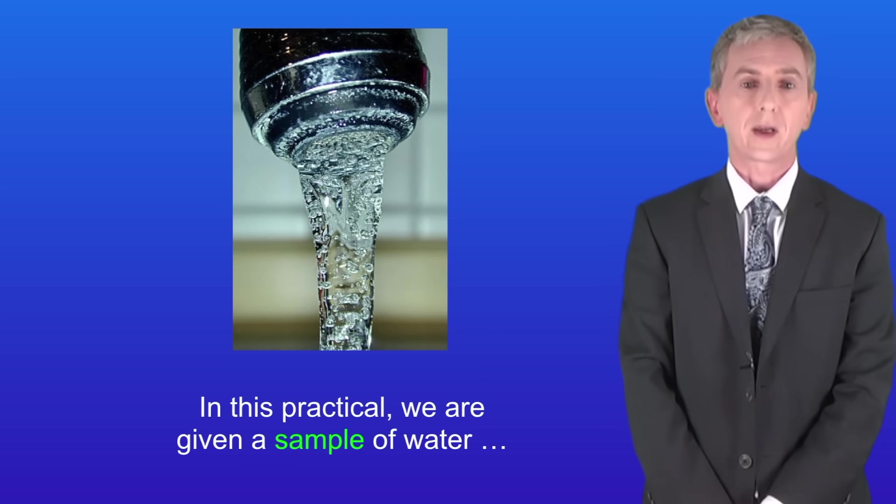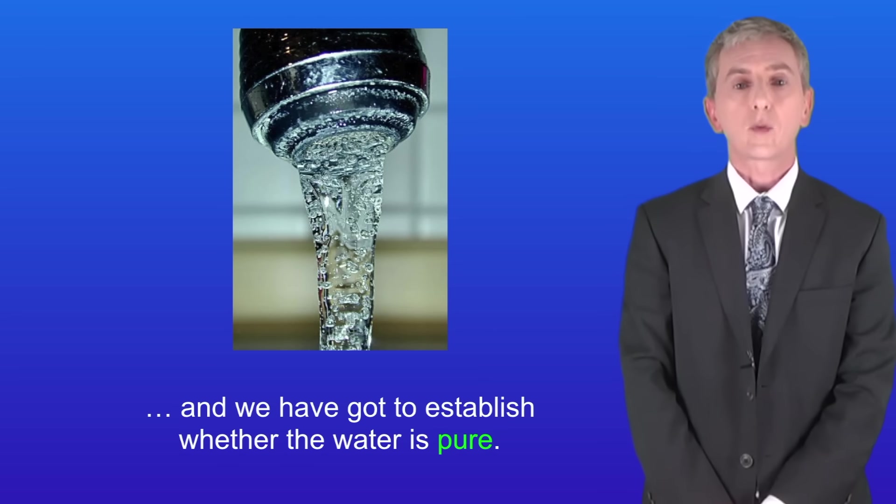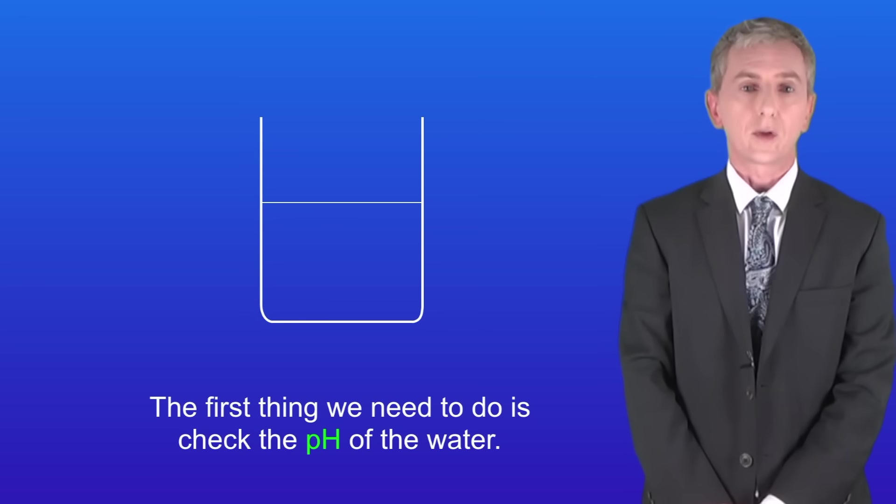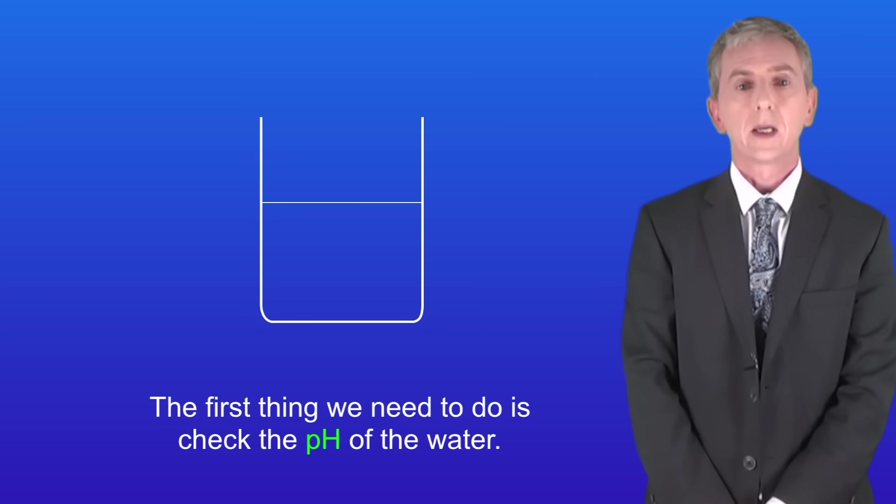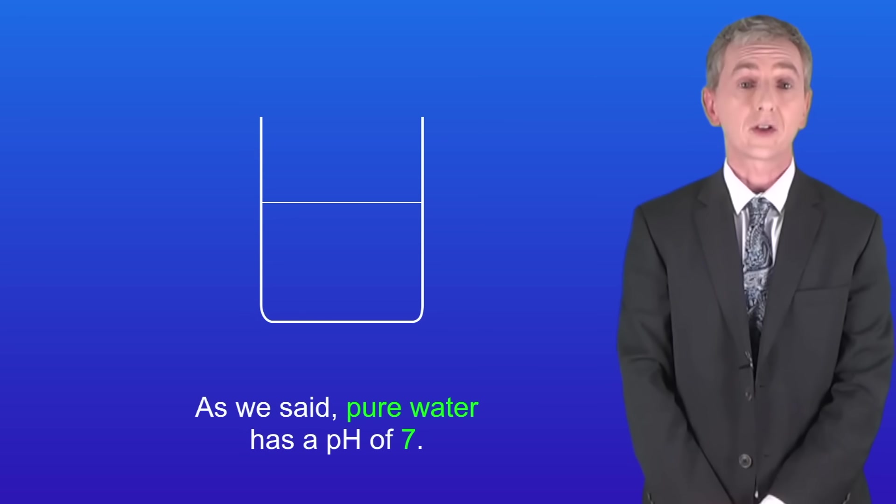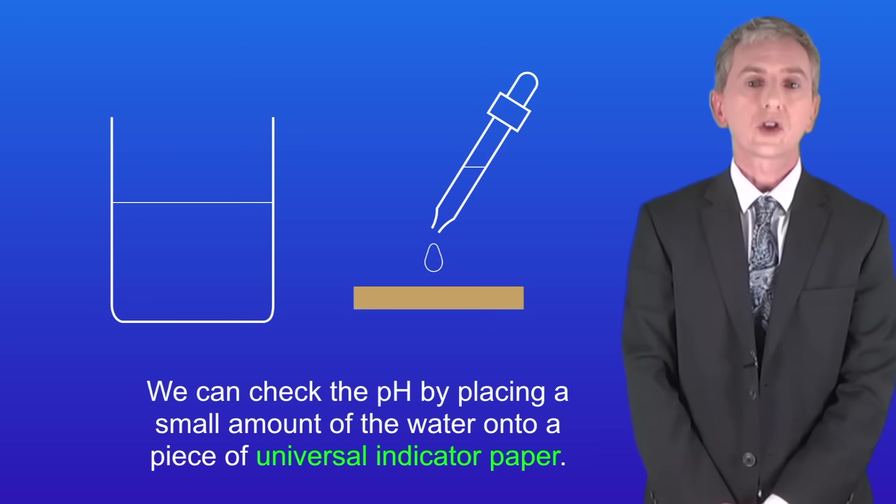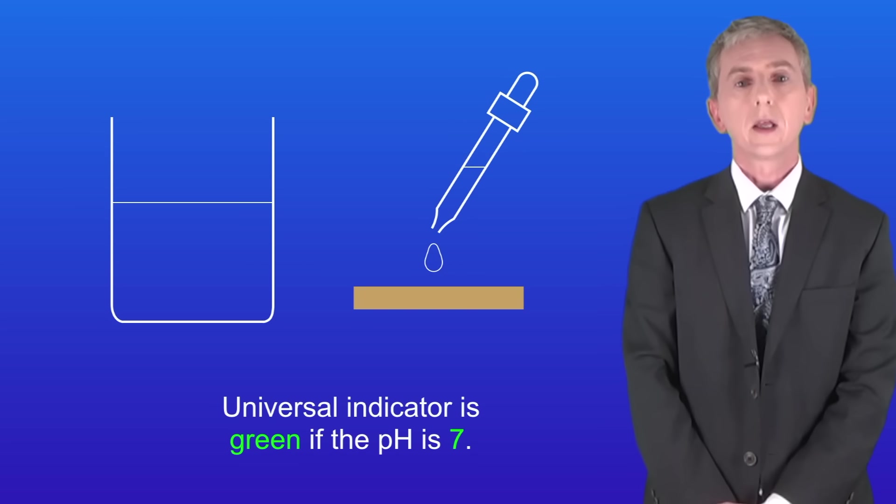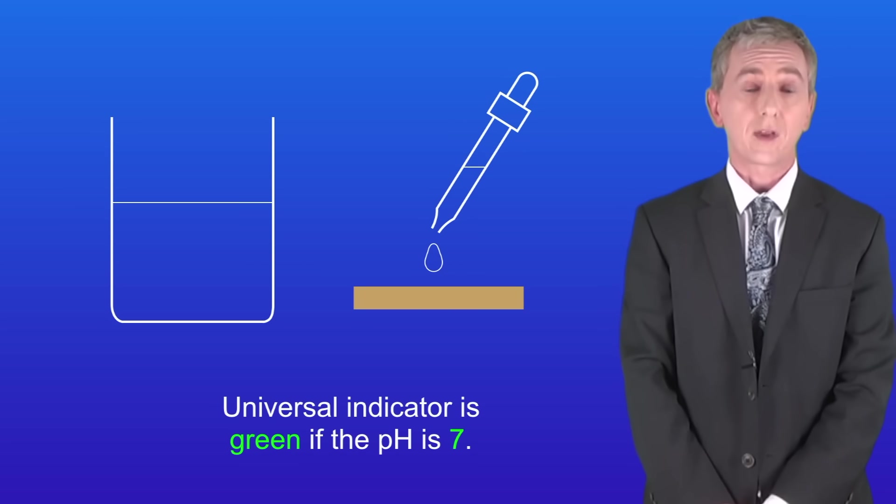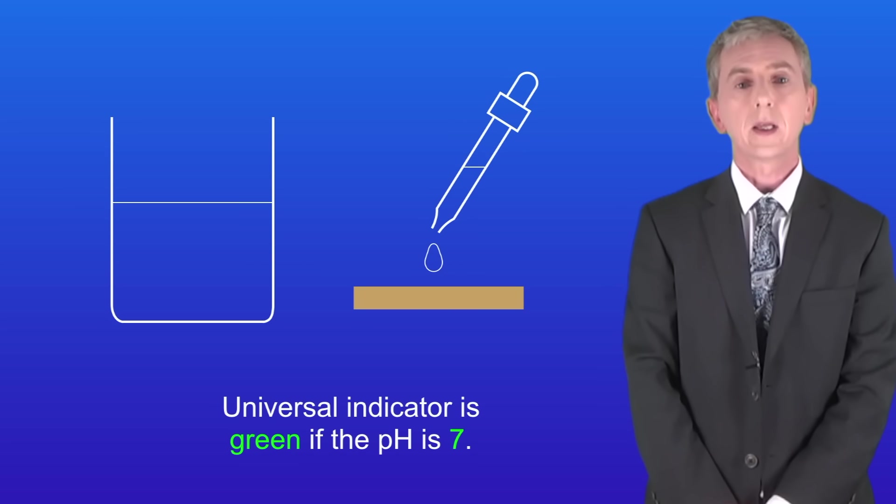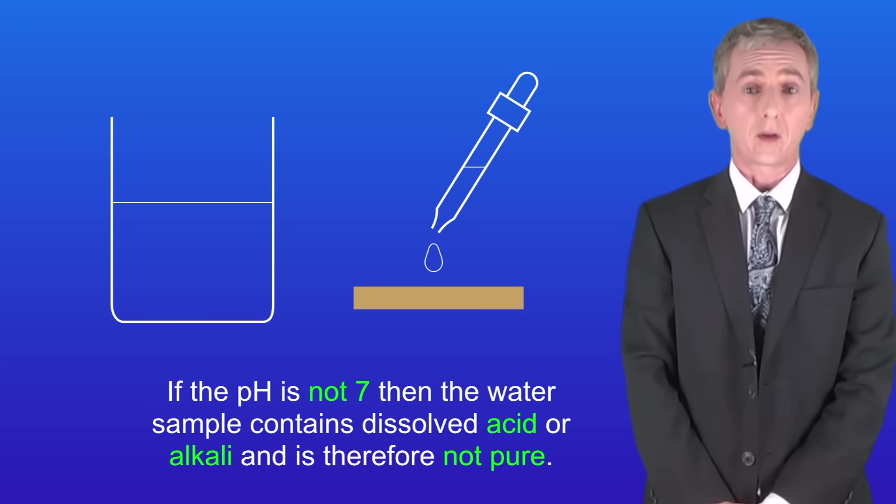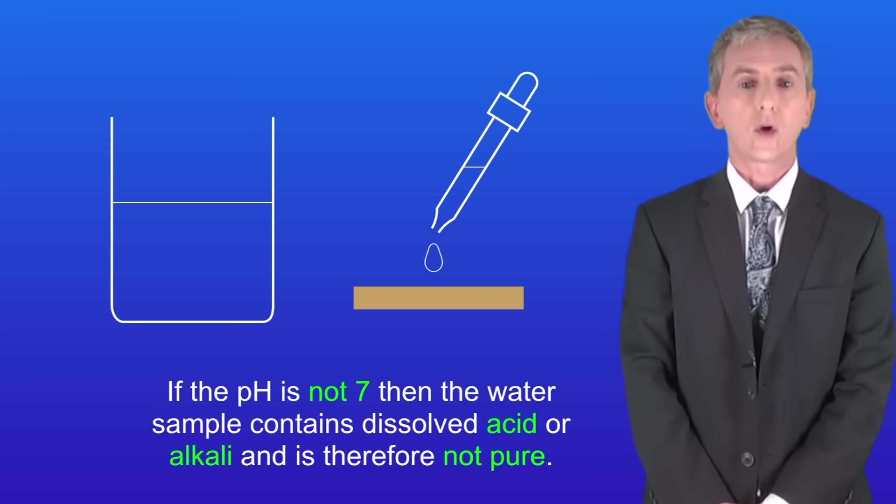In this practical we're given a sample of water and we've got to establish whether the water is pure. The first thing we need to do is check the pH of the water. Pure water has a pH of 7. We can check the pH by placing a small amount of the water onto a piece of universal indicator paper. Universal indicator is green if the pH is 7. If the pH is not 7 then the water sample contains dissolved acid or alkali and is therefore not pure.